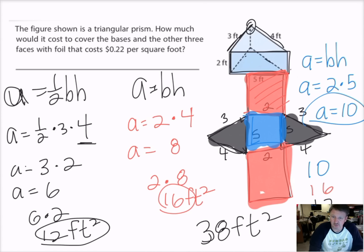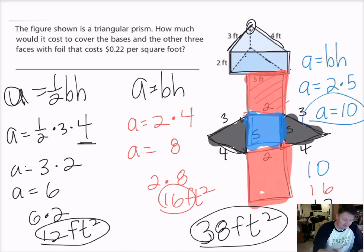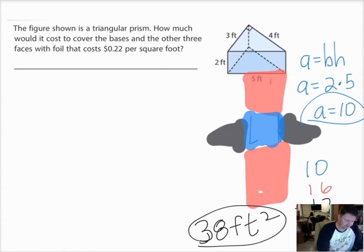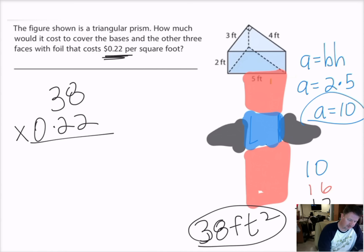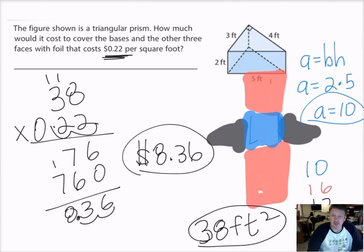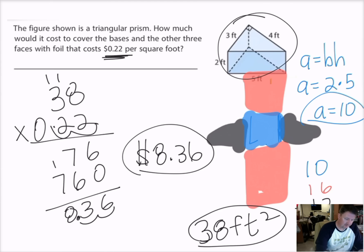Now 38 square feet is my total surface area, but that's not where I need to stop — I need to find out how much it's going to cost. I take my 38 square feet and multiply it by 22 cents, or 0.22. 2 times 8 is 16; 2 times 3 is 6, plus 1 is 7; then the second row gives me 76. Accounting for two decimal places, my final answer is $8.36 to cover this shape in foil that costs 22 cents per square foot.